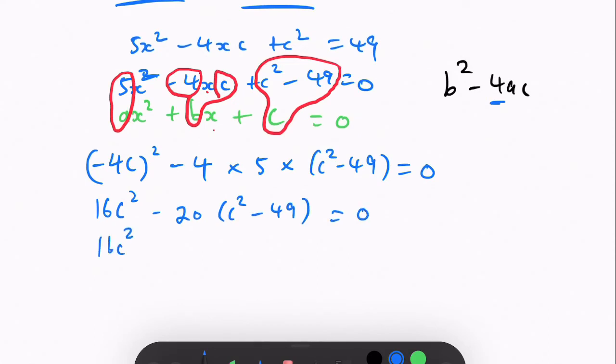Then we get 16c squared minus 20c squared equals 0, and 16c squared minus 20c squared plus 980 equals 0, because minus times minus gives you positive.